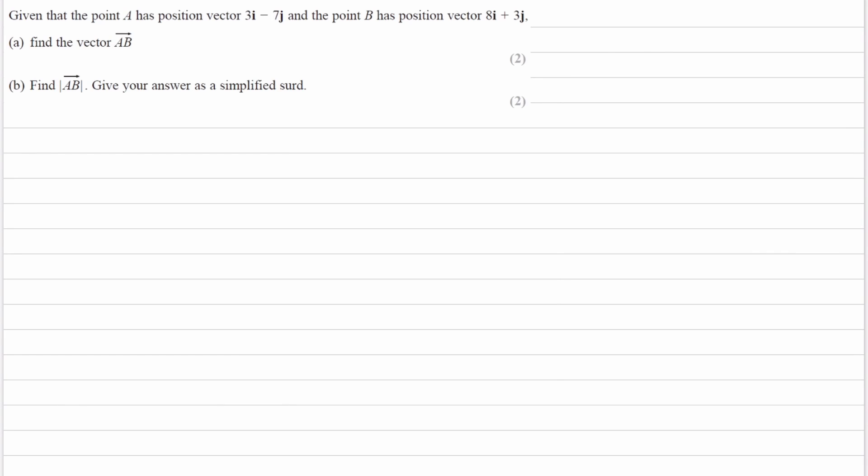We're given the position vectors of A and B. Position vector means the vector from the origin to that point. So the position vector of A, OA, would then be equal to, in column notation, 3, -7. For column notation, you put the i components in the first place, and then you put the j components just beneath it.